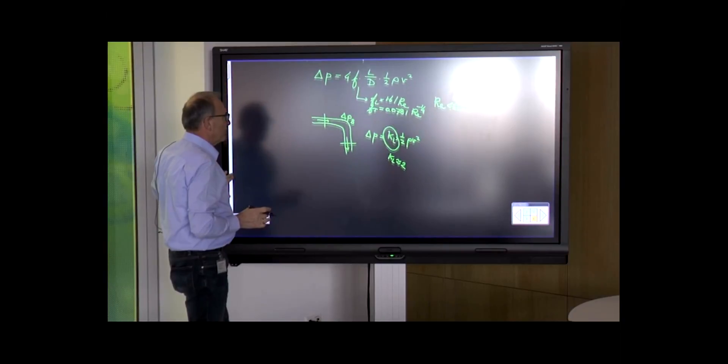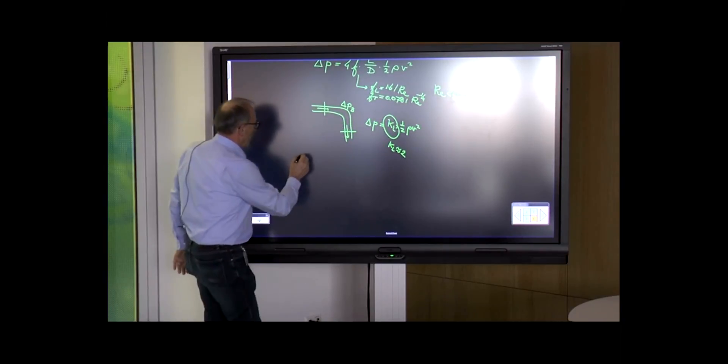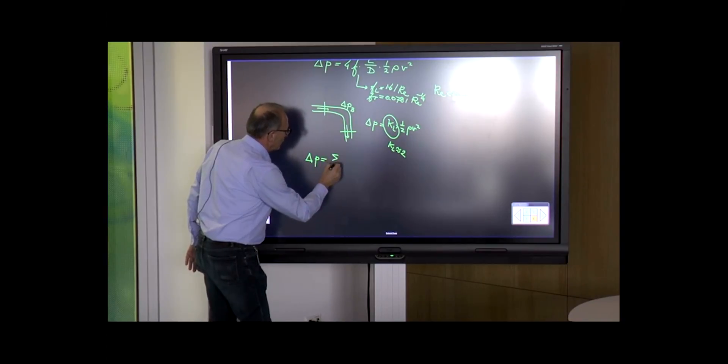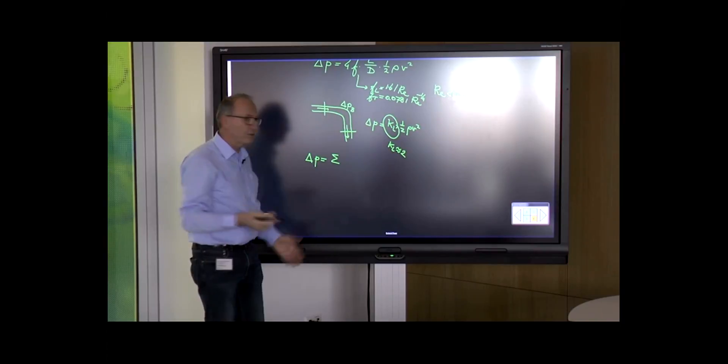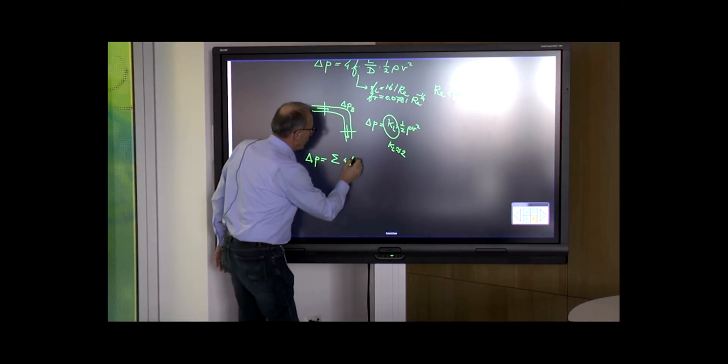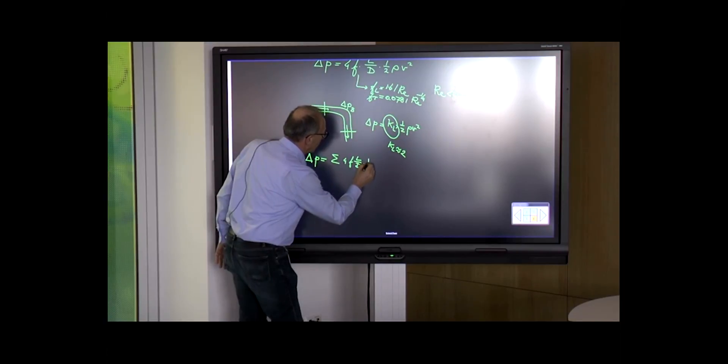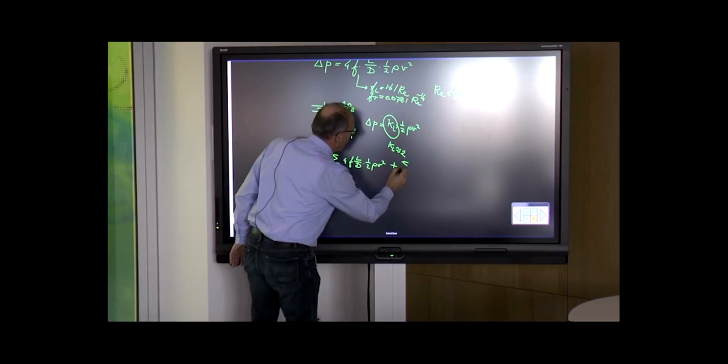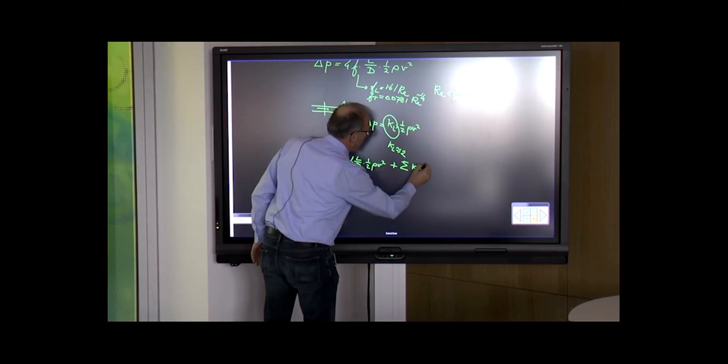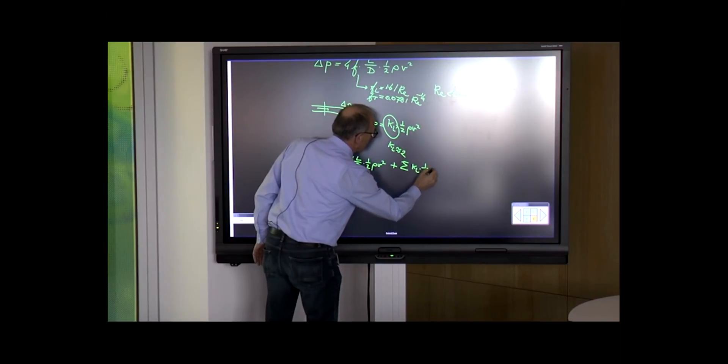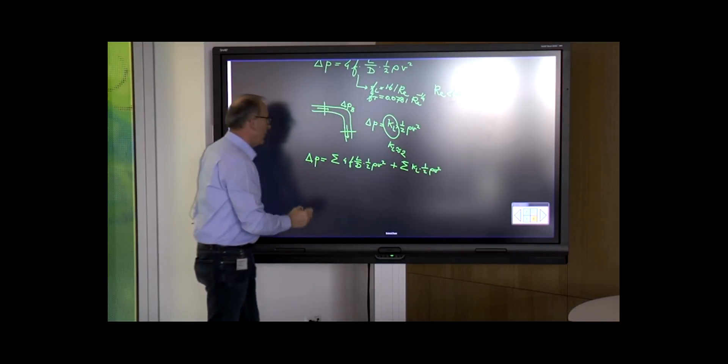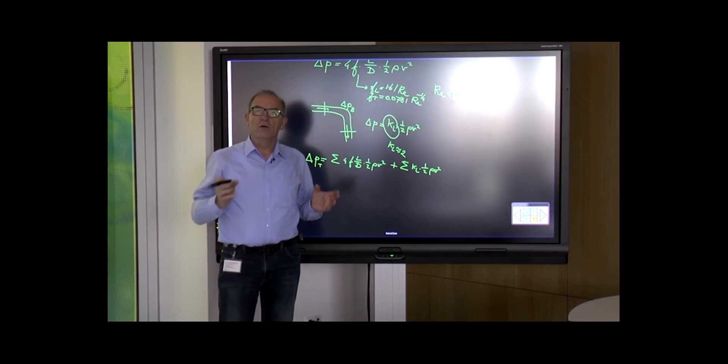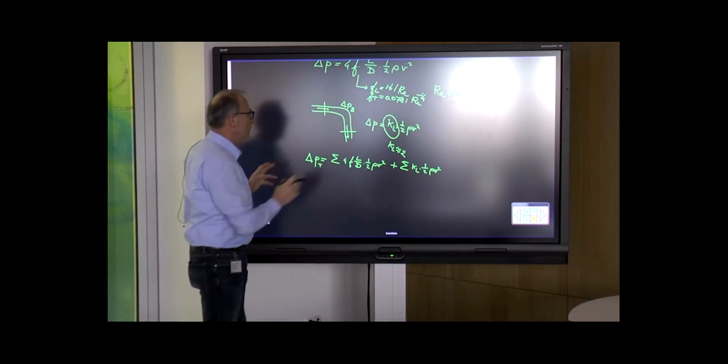If we have a complex system with a number of straight pipes, we take the sum of all these pipes, which can be calculated with the Fanning friction factor and formula, plus the sum of all the bends, fittings, and valves in the system. The total pressure loss is the sum of these two components.